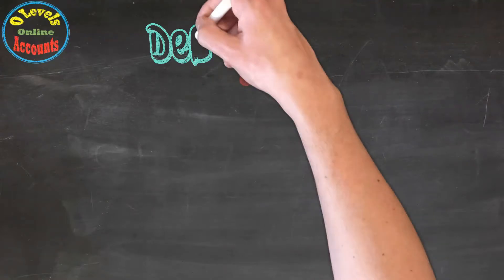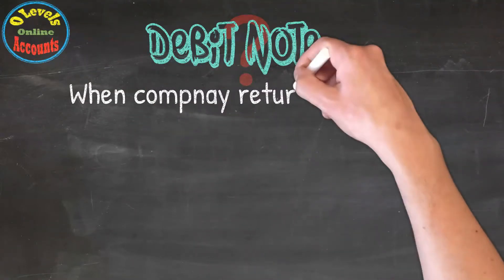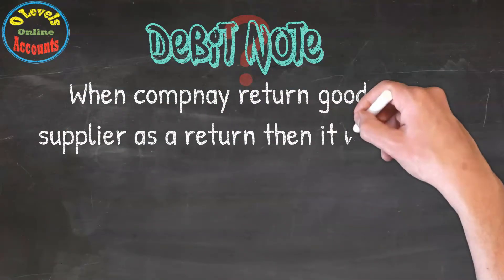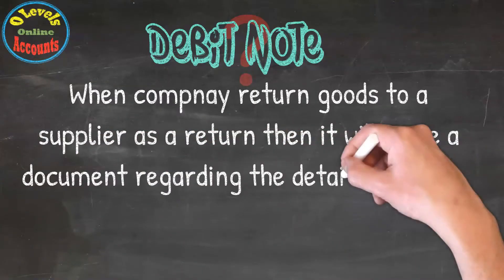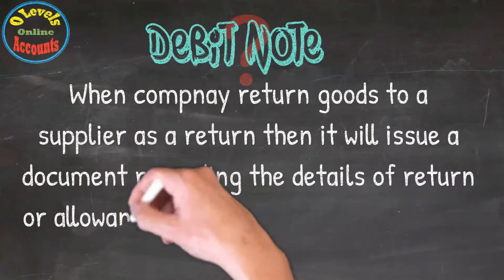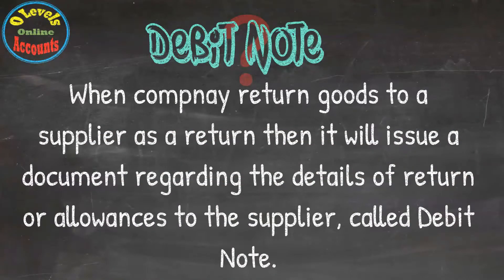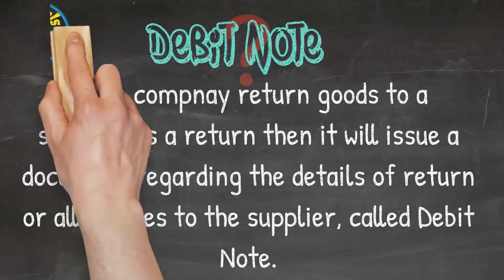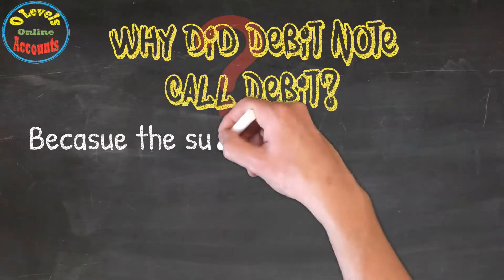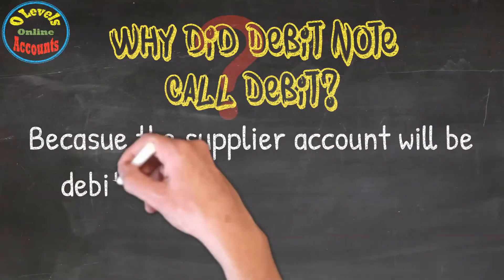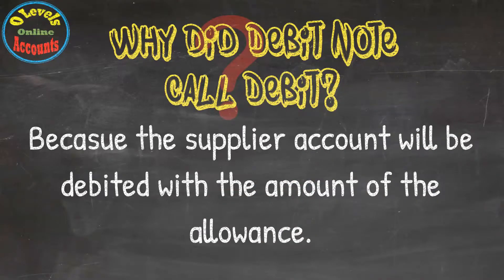What is a debit note? When a company returns goods to a supplier, it will issue a document regarding the details of the return or allowances to the supplier, called a debit note. Why is it called a debit note? Because the supplier account will be debited with the amount of the allowances.